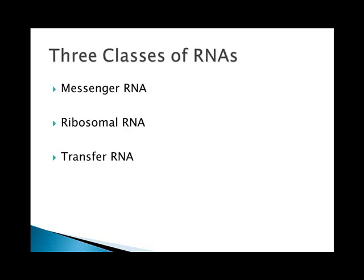There are three classes of RNAs. mRNA travels from the nucleus to the ribosome and is created during the process of transcription. rRNA combines with proteins to form ribosomes in the nucleolus. And tRNA brings the correct amino acid to the ribosome from the cytoplasm and pairs up with an mRNA code for that amino acid.